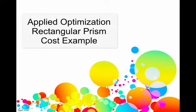In this video we're going to continue our applied optimization examples and we're going to look at a rectangular prism with a little bit of a twist. We're going to include a cost where the various parts of the prism actually have different costs.